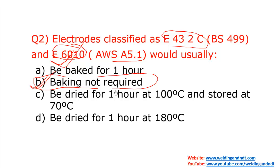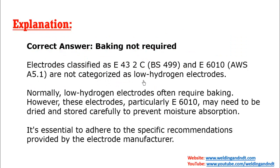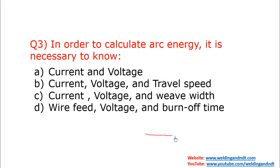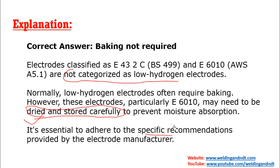Baking is required only for low hydrogen electrodes. In low hydrogen electrodes like E7018, you need baking. Whereas E6010 electrodes are not characterized as low hydrogen electrodes, so baking is not required. However, they need to be dried and stored carefully to prevent moisture absorption. There should be no moisture on the electrode, and you need to follow manufacturer recommendations.